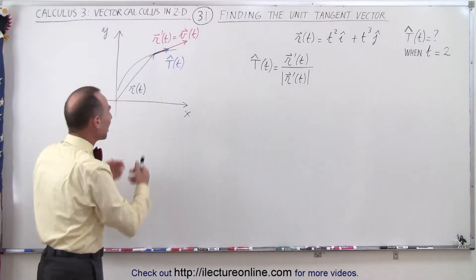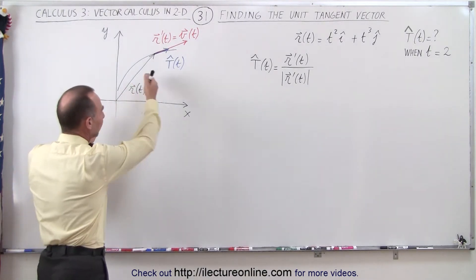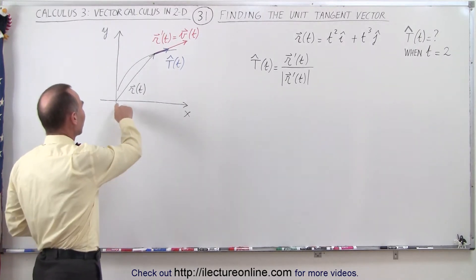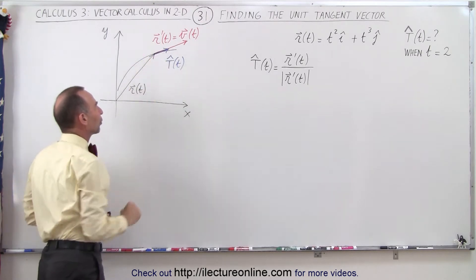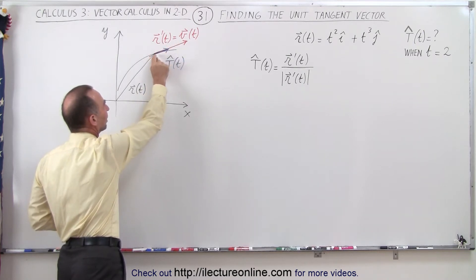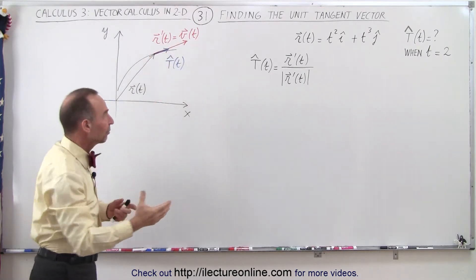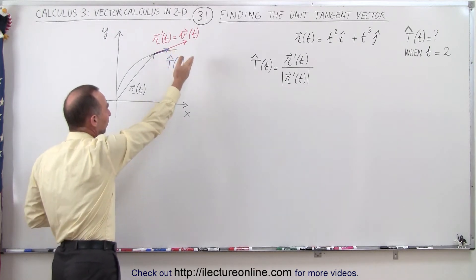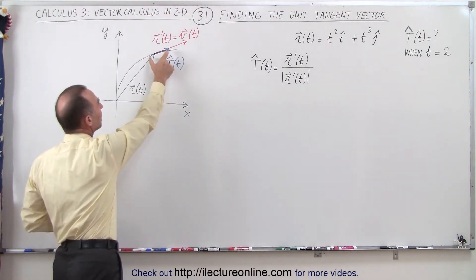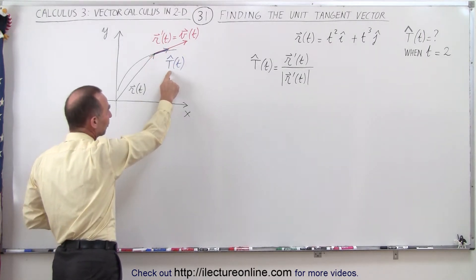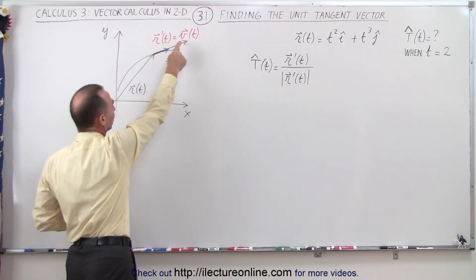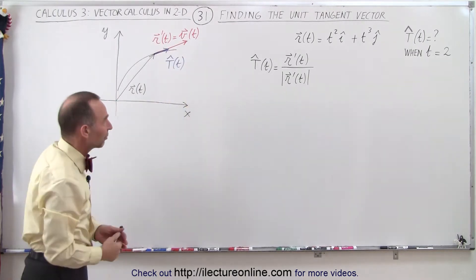Here we have a graphic of that — not saying this is the exact function, just a general shape of any function. Notice we have a position vector pointing to a point on that curve, and then the derivative of that position vector is representative of the velocity of a point on that curve as a function of the parametric variable t. This could of course be time if it's velocity.